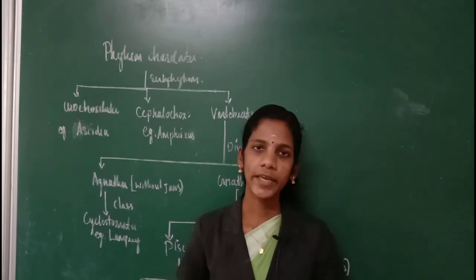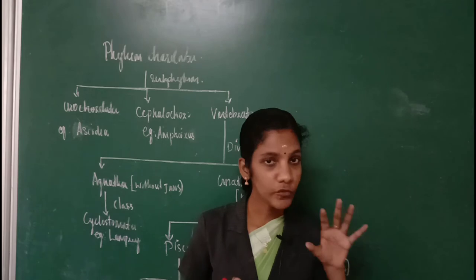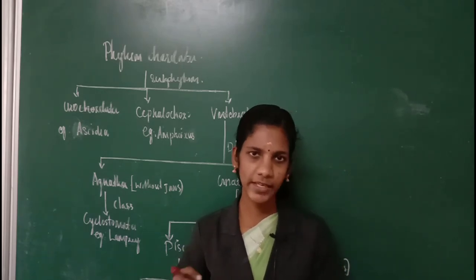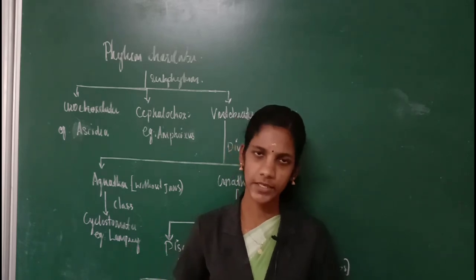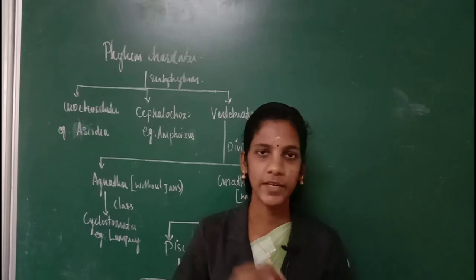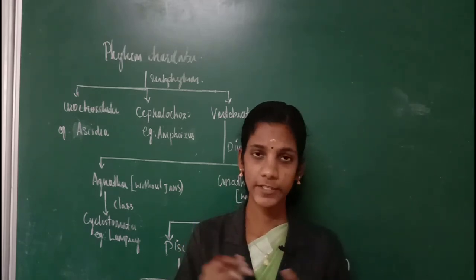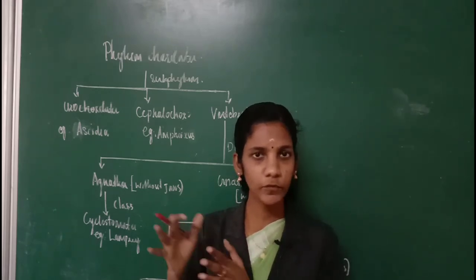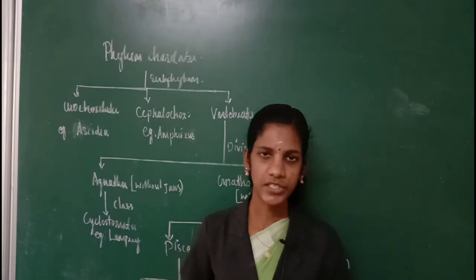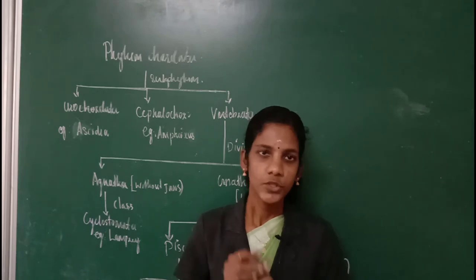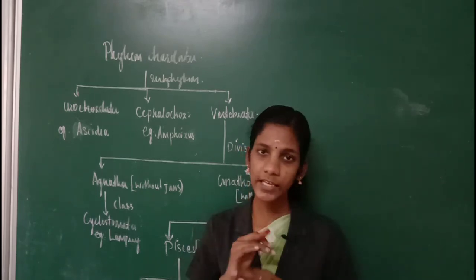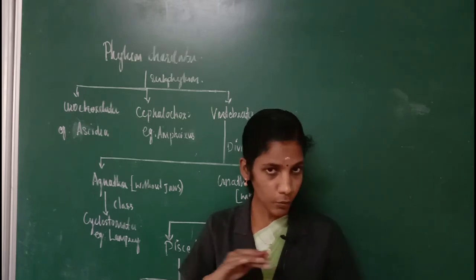In the case of lower chordates, they will use these gill slits for filter feeding. But in the case of fishes, they will use their gill slits for respiration. In the case of higher chordates, gill slits will not be present throughout their lifetime — it can be seen only during the embryonic stage.